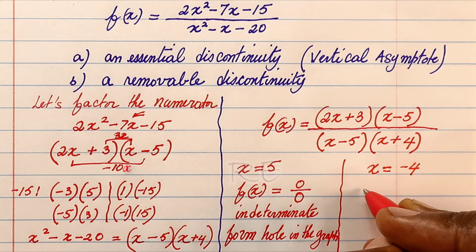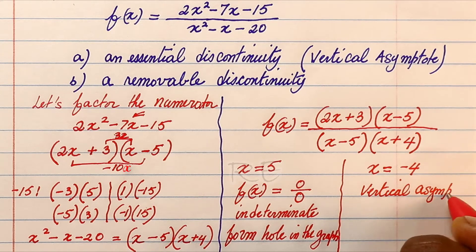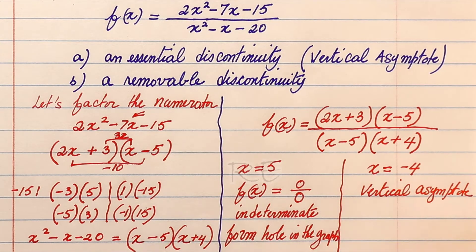Now x equal to negative 4 will be the essential discontinuity because a vertical asymptote is a part of the graph that cannot be connected.